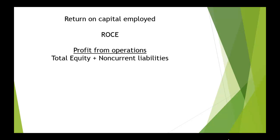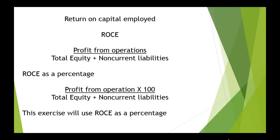We often express ROCE as a percentage. So if we use ROCE as a percentage, then we multiply by 100 over 1. So it's profit from operations times 100, divided by total equity plus the non-current liabilities. And in this exercise, we're going to use ROCE as a percentage.